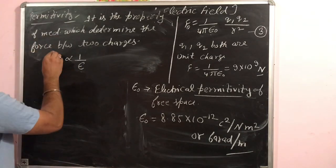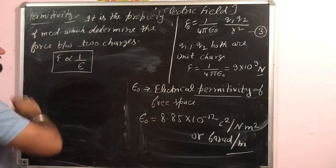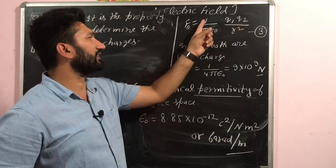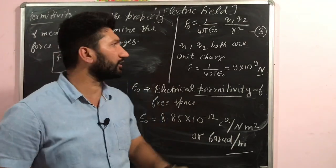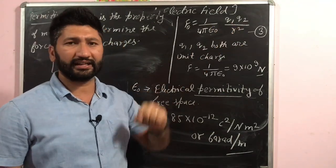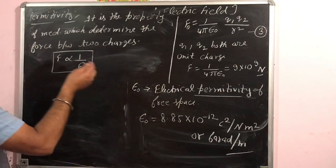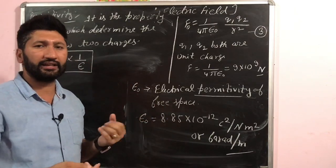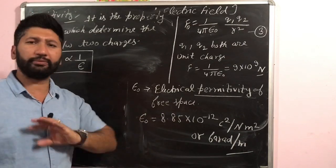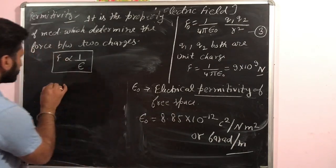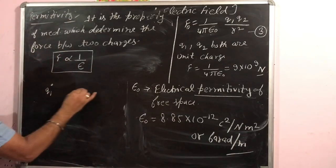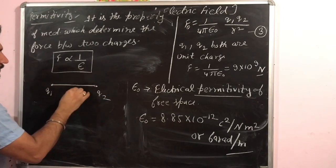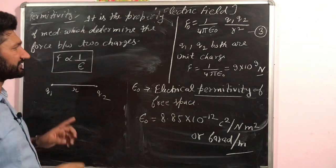For free space the force is F₀ = (1/4π·ε₀)·q1·q2/r². If the two charges are placed in a medium other than air — like water — then the force becomes Fm = (1/4π·εm)·q1·q2/r², where εm is the permittivity of that medium.